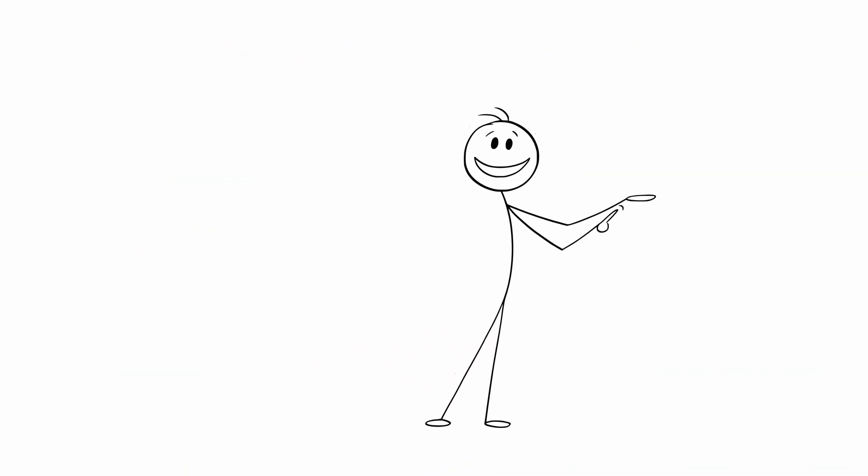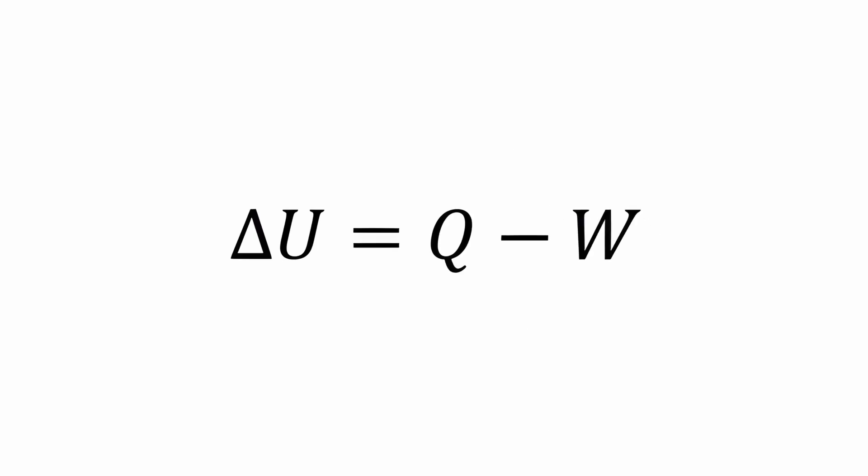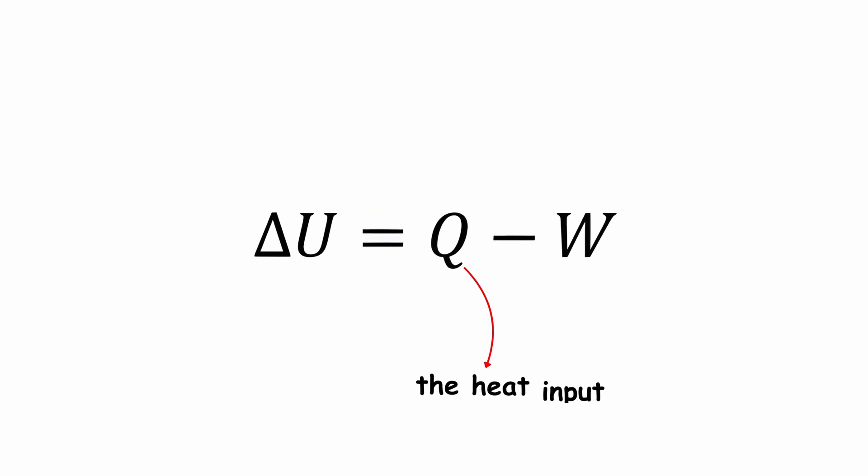The law is expressed as ΔU equals Q minus W, where ΔU represents the change in a system's internal energy, Q the heat input, and W the work performed by the system.